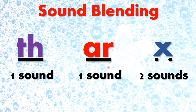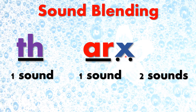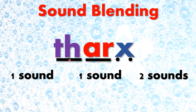Now we are going to blend these sounds together. We are going to start with AR and X — AR, KS. Then we are going to add TH to make: TH, AR, KS — thanks!